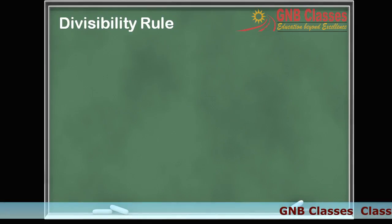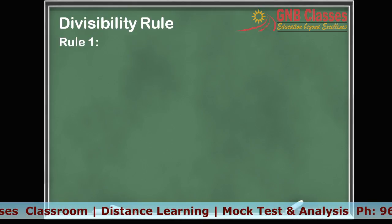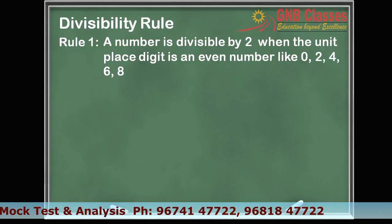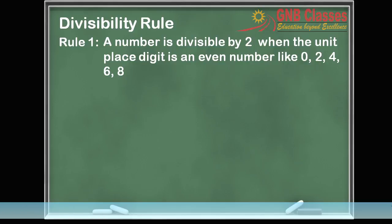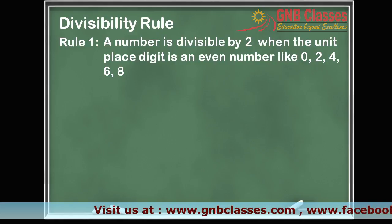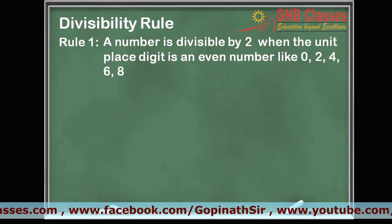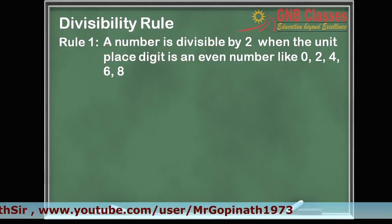Divisibility rules. The first rule is about checking whether a number is divisible by 2 or not. Whenever any number ends with a digit like 0, 2, 4, 6, or 8, then the number is divisible by 2. That is, any number whose units digit is 0, 2, 4, 6, or 8 is divisible by 2.